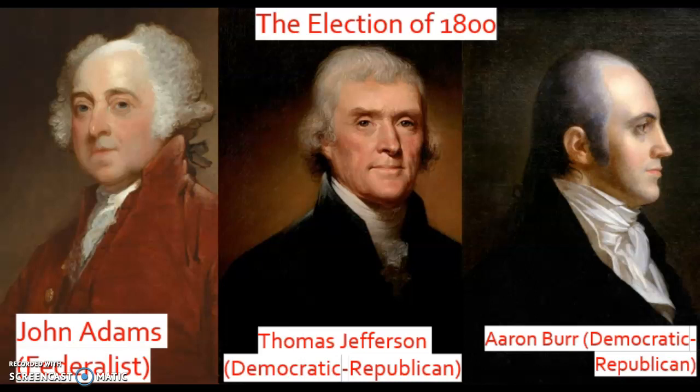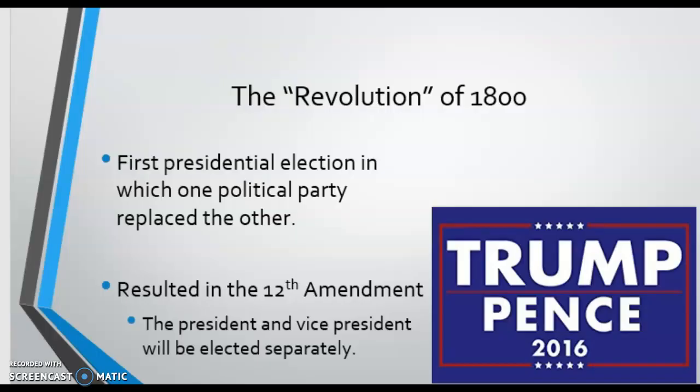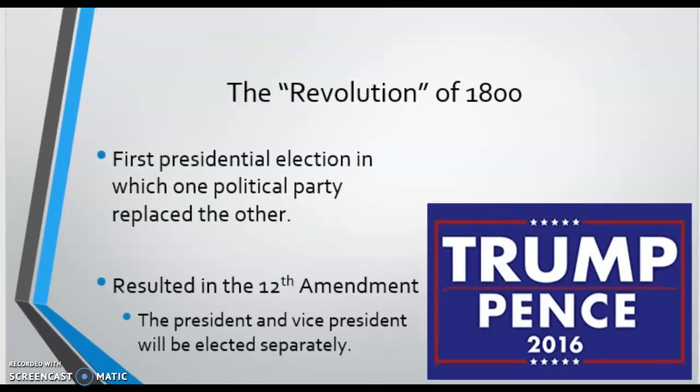In this election, what we have is the Revolution of 1800. It's the first presidential election in which one political party replaced the other, and it did so peacefully. In the election of 1800, Jefferson and Burr, the two Republican candidates, emerged with 73 electoral votes each. Adams only received 65. When Burr shockingly refuses to withdraw in favor of Jefferson, the tie vote in the Electoral College is sent to the House of Representatives.